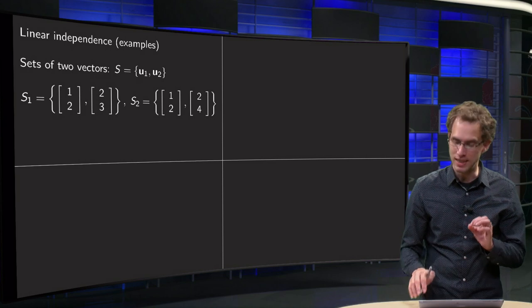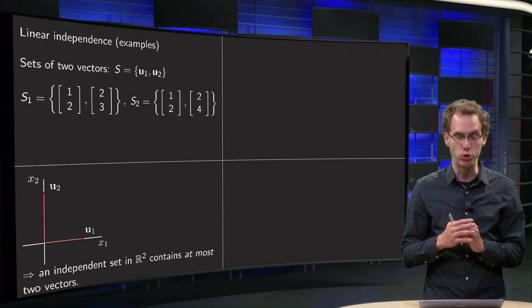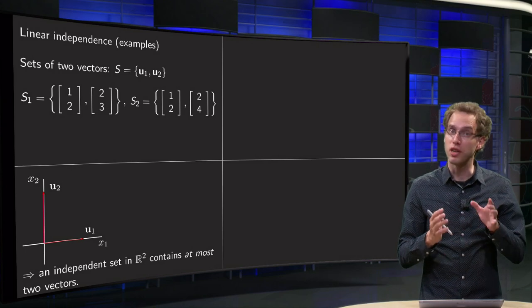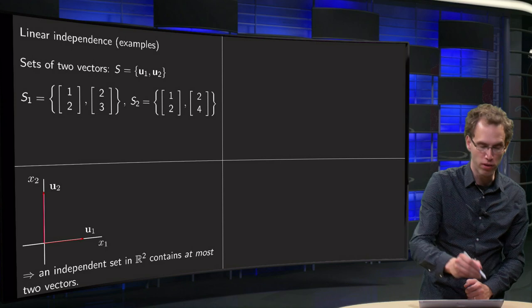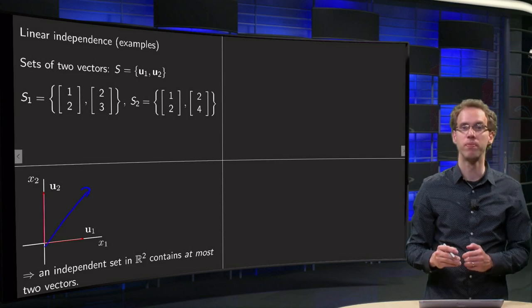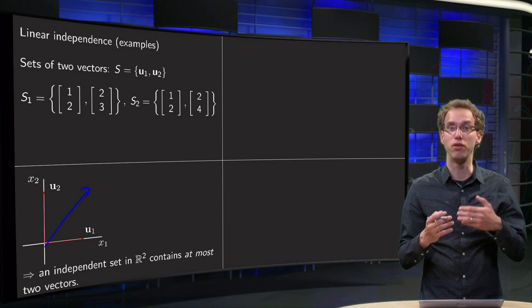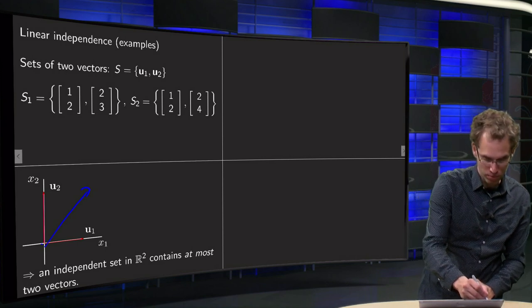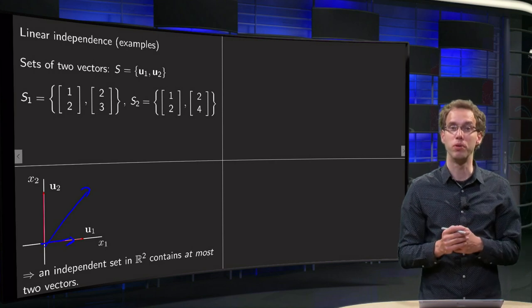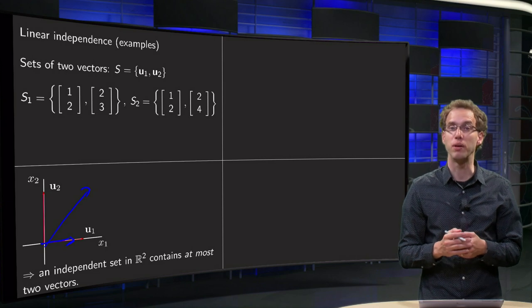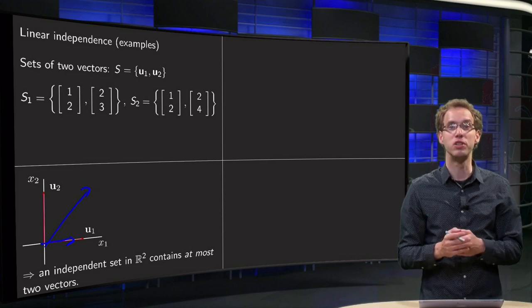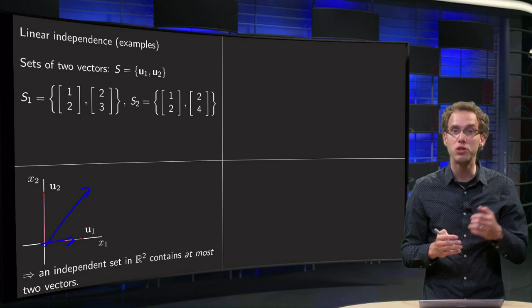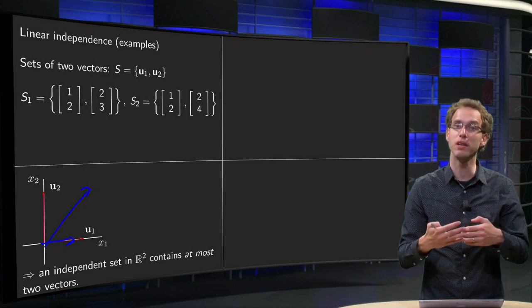We have some more easy cases. Suppose we are in R² and we have two independent vectors U1 and U2. If I try to add one more vector, that third vector is immediately a linear combination of U1 and U2 — for example, 1 times U1 plus 1 times U2, or 0 times U2 plus one-half times U1. No matter what you try, you cannot have more than two linearly independent vectors in R². So R² contains at most two independent vectors, R³ at most three, and so on.